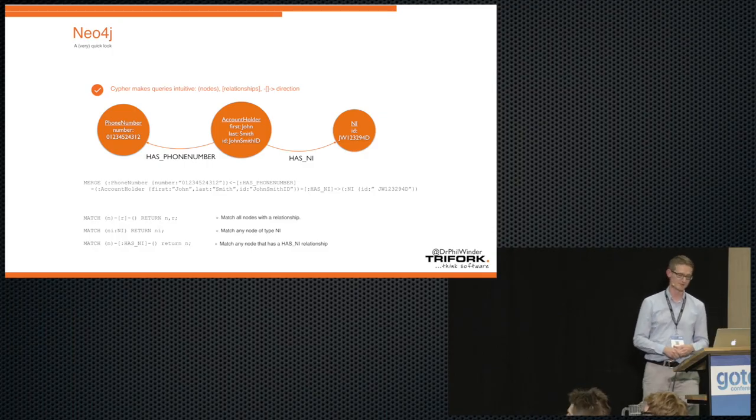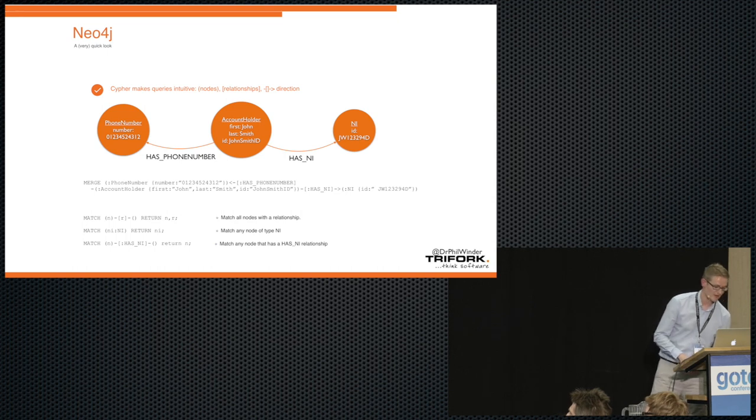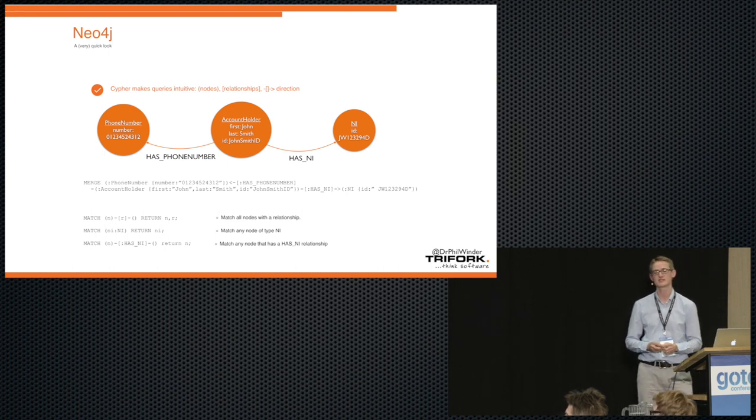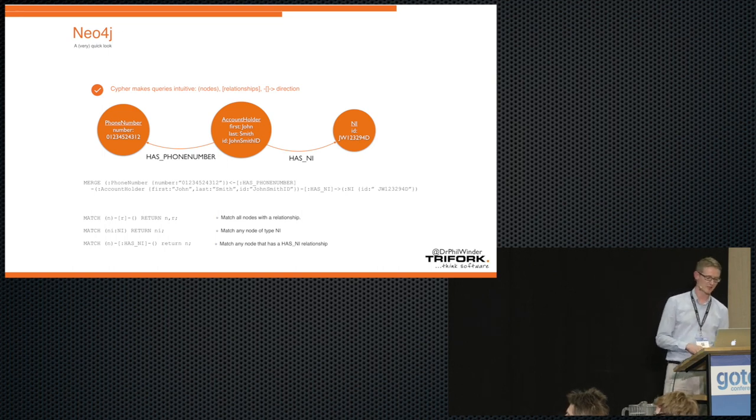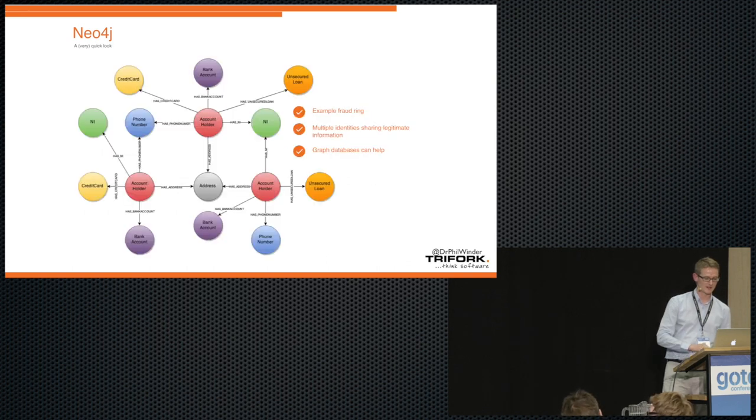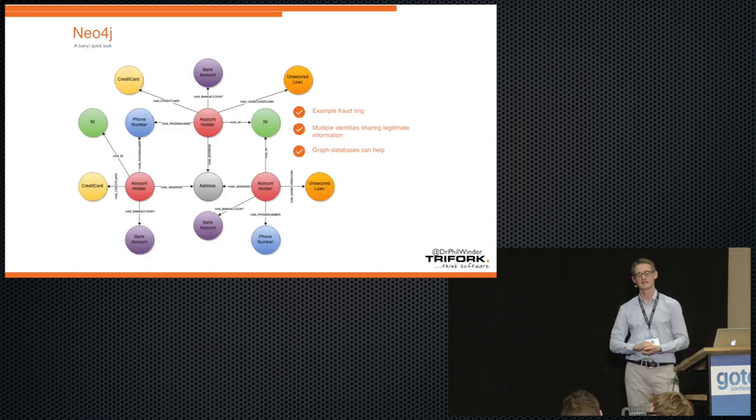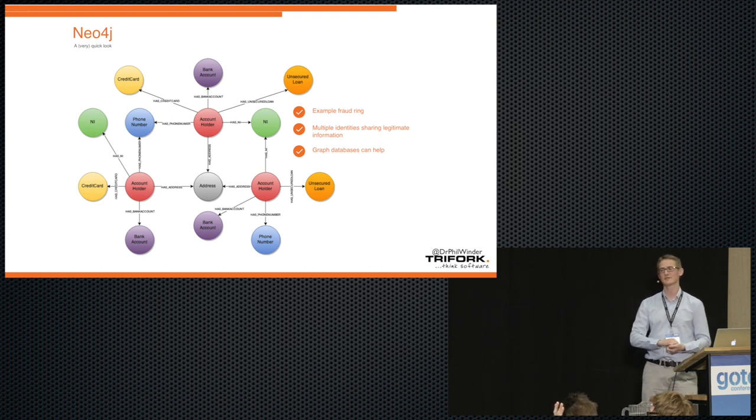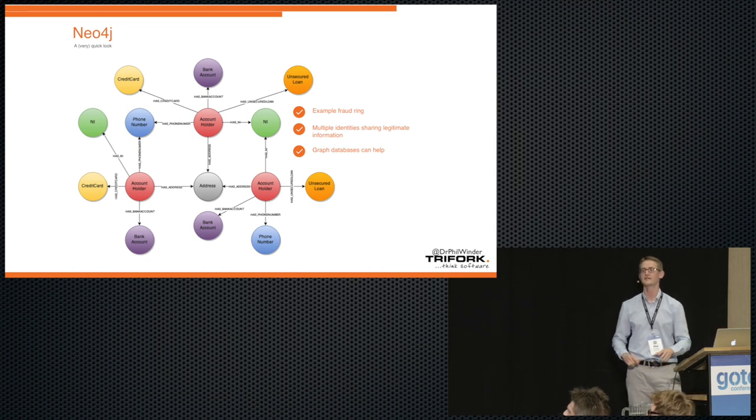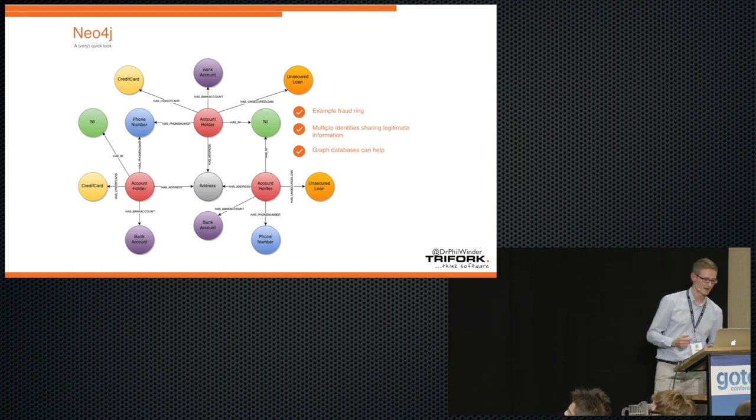In a fraud situation, we might model our data something like this. We might have an account holder in the middle, and they have relationships with phone numbers, or national insurance numbers, things like that. Then we can perform queries on that if we would like to. But when you start viewing that in detail, and actually viewing how these connections are connecting things together, interesting patterns start to come out. Especially if you're visualizing it in this way as well. It's much easier to visualize data in this way than it is in a table, for example. In this example, we've got three account holders in red. They're linked in various different ways.